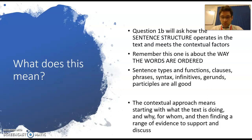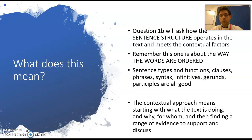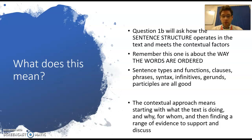When I talk about the contextual approach, what I mean is you start with what the text is doing, why, and who it's for, and then you find the evidence to support it. That's not necessarily the best way - it's not the way that everyone will want to do it. Some people would rather start with the features, but I want to show you how you do it this way, and then I'll show you how you do it using the technical approach so that you can decide which suits you, or maybe mix and match both.